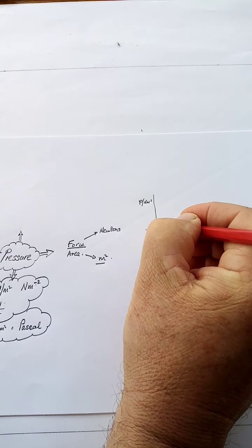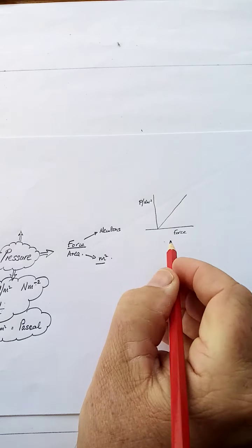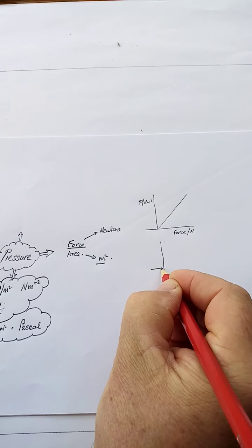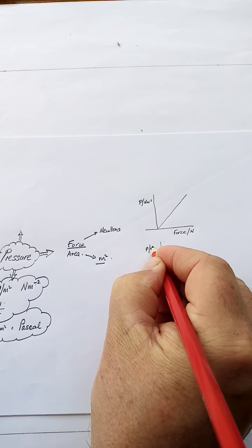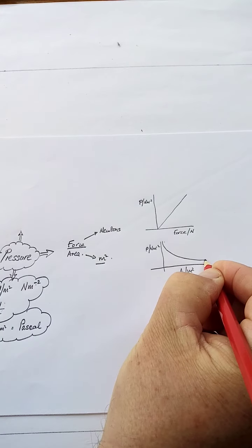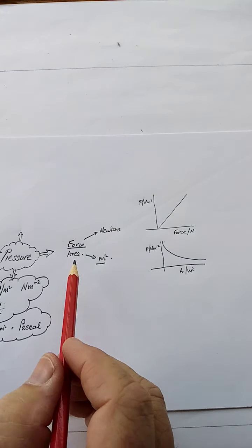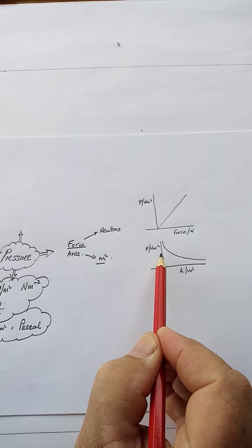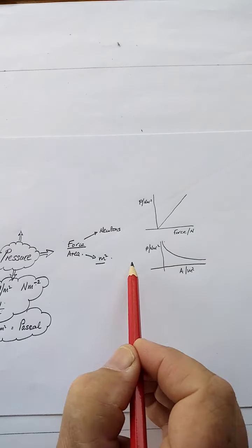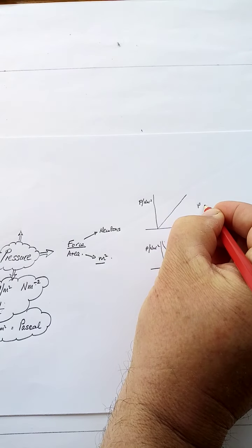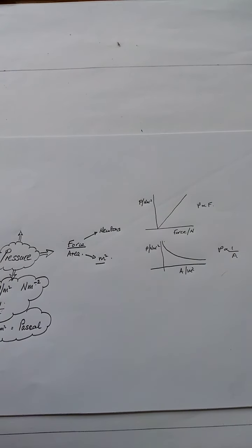Well, they are directly proportional. So it goes through the origin like that. The area here is constant. What's the link between pressure, newtons per meter squared, and area measured in meters squared? Well, that's inversely proportional. So as the area gets bigger, the pressure gets smaller. That's inversely proportional. So P is proportional to 1 over A, and P is proportional to F. They are directly proportional.